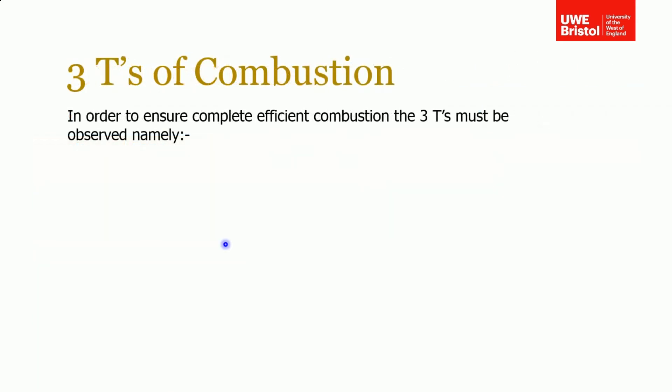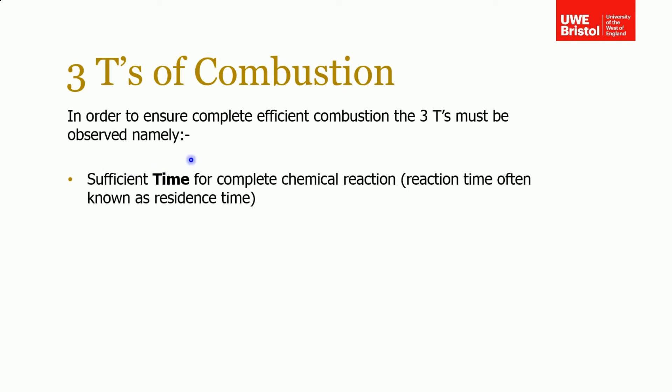Beyond the fire triangle, to ensure complete and efficient combustion you can think in terms of the three T's. The first is time — we need sufficient time for the chemical reaction to take place, called residence time. In the context of a reciprocating engine running at 2000, 3000, or 4000 RPM, you put strain on the time available for complete combustion, which becomes more challenging as that available time decreases.